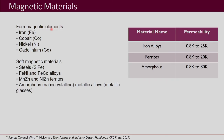Welcome to the course on design of power electronic converters. We were discussing magnetics design. Let us now look into the different magnetic materials that are used for making magnetic cores. The materials used for making magnetic cores are basically ferromagnetic elements — the main ones being iron, cobalt, nickel, and gadolinium.